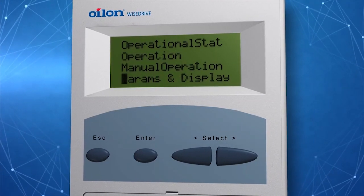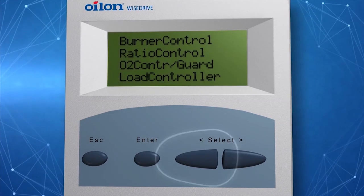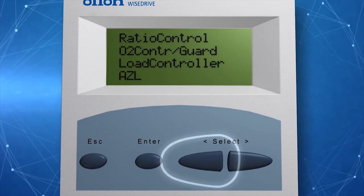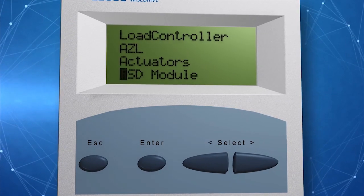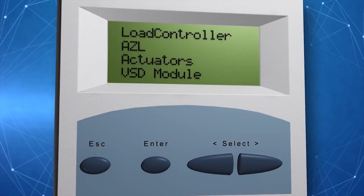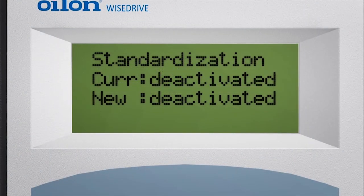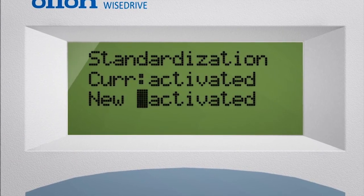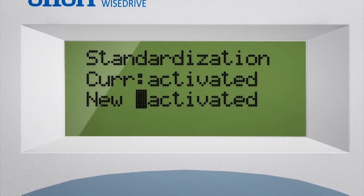To change the set values, select the parameters and display menu. Then select the parameter you want to change. Set the new parameter value using the select arrow buttons. To save a selected new value, press the enter button.